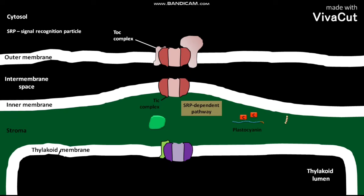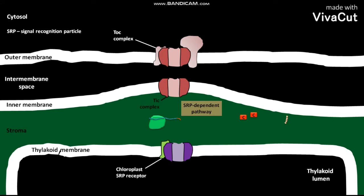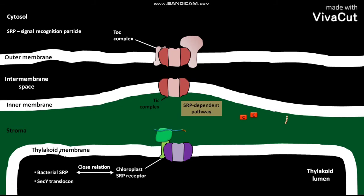The exposed thylakoid targeting sequence then directs the plastocyanin protein to bind to a chloroplast SRP. The chloroplast SRP with bound plastocyanin protein then binds to the chloroplast SRP receptor present in the thylakoid membrane. The chloroplast SRP is closely related to bacterial SRP and the SecY translocon.